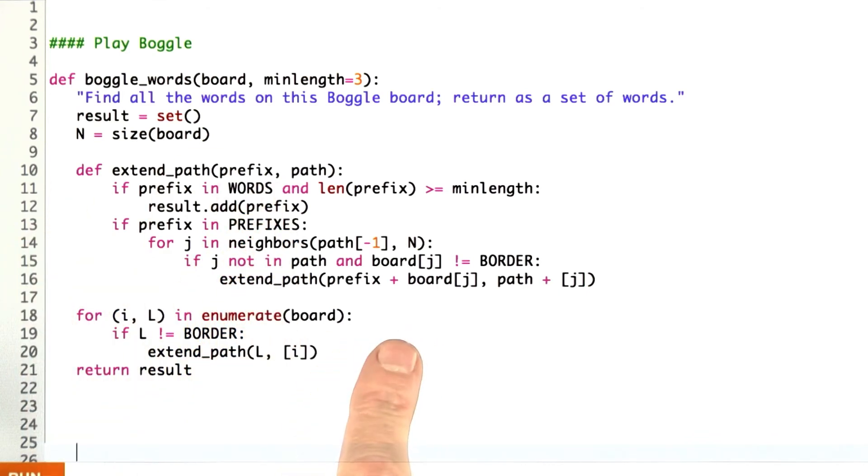Now, part of the Zen of Python is that flat is better than nested. Why did I nest here? Well, it's a judgment call.